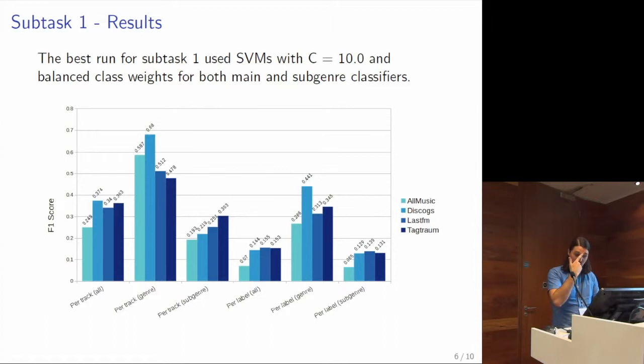What's apparent is, of course, it's logical: predicting genre is much easier than sub-genre. And what's also apparent is the per-track metrics performed better than the per-label metrics.